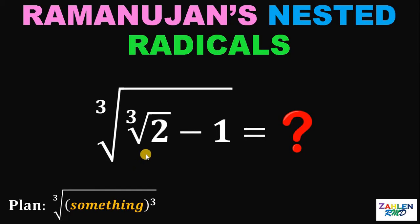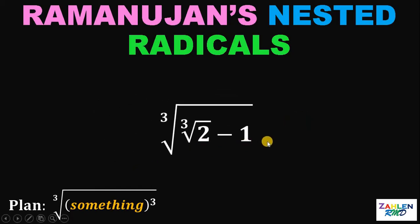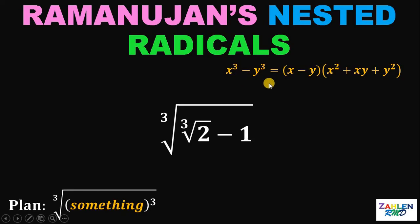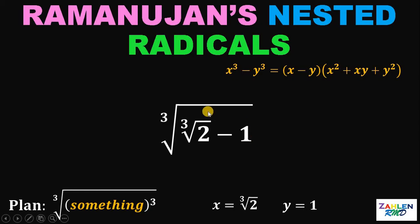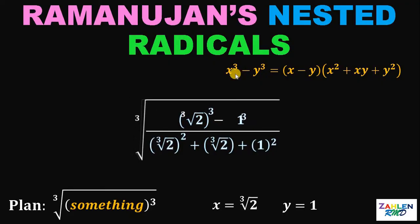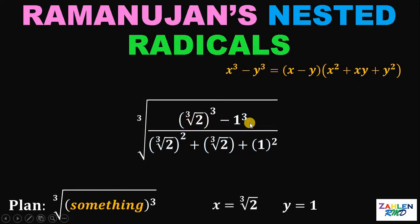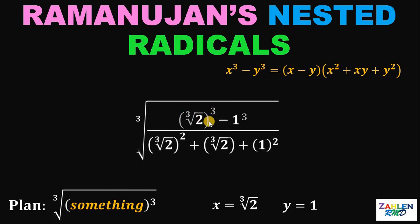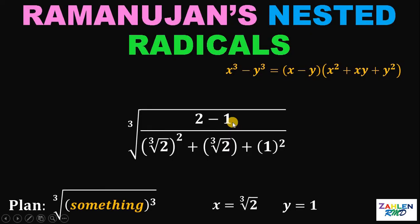Let's focus on the expression cube root of cube root of 2 minus 1. One thing to notice is we have a subtraction sign, so maybe we can use the difference of cubes identity. Here, x must be cube root of 2 and y must be 1. Let's multiply the expression inside the cube root by cube root of 2 squared plus cube root of 2 plus 1 squared. If we do that, the numerator is equivalent to x cubed minus y cubed, or simply cube root of 2 cubed minus 1 cubed. Cube root of 2 cubed is just 2, so we have 2 minus 1, which equals 1.